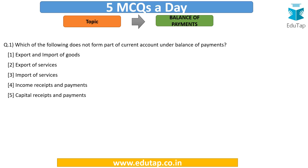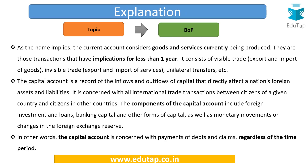The correct answer is Option 5 — capital receipts and payments — because the question asks which does NOT form part of the current account. This is how the examiner will try to trap you.